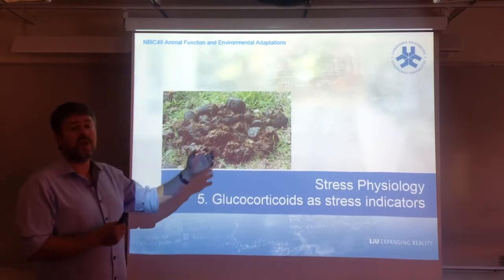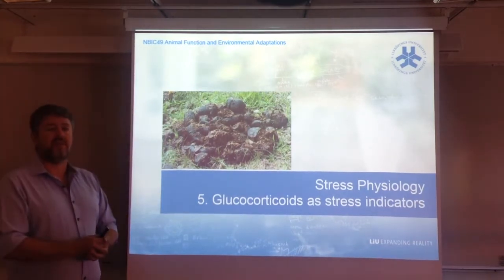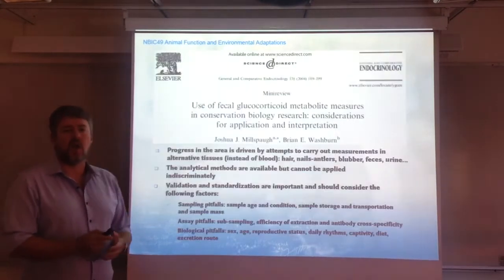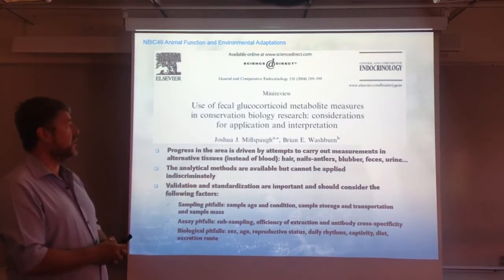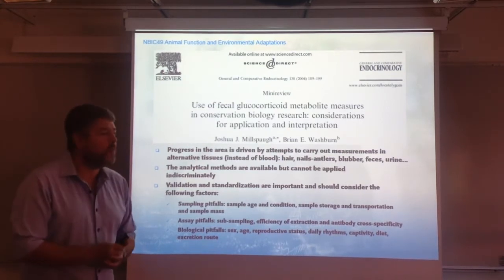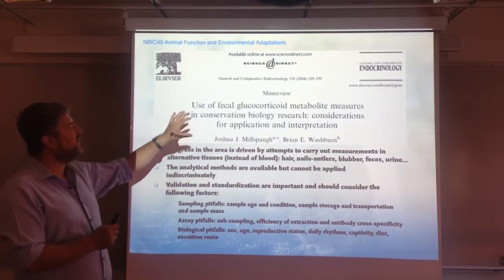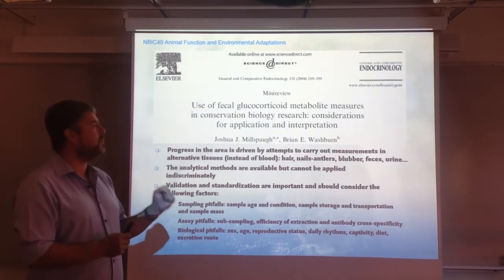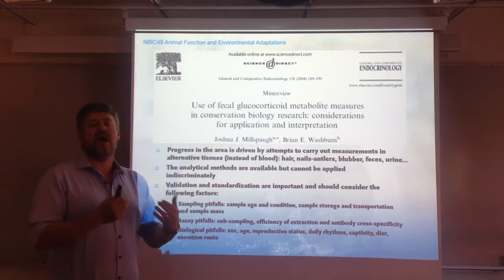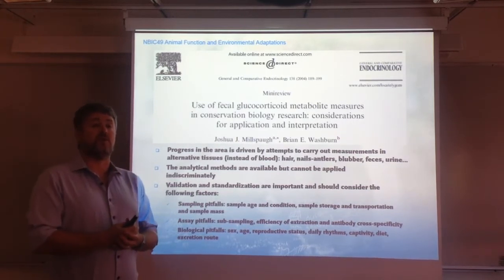Feces and urine have levels of glucocorticoids that presumably could indicate the level of stress. In the first part of the lecture I'm going to talk about how we can use these samples, and give you an example on how it's done. I want to emphasize this particular review paper published by Niels Spock and Washburn, in which the authors detail considerations that are important in order to use fecal glucocorticoids as stress indicators, giving information about the stress status of the animal.